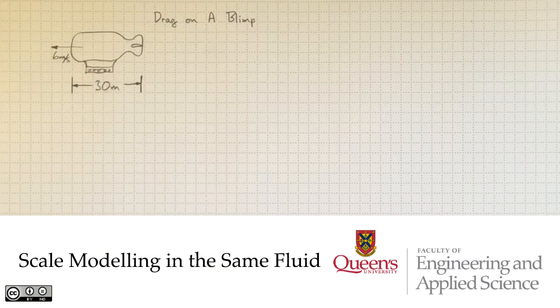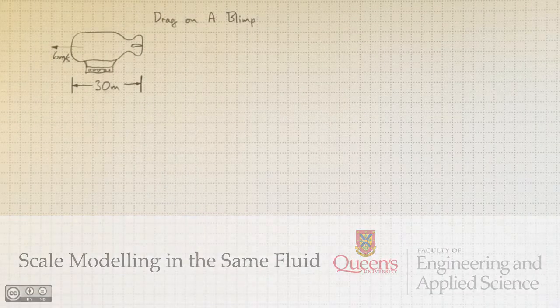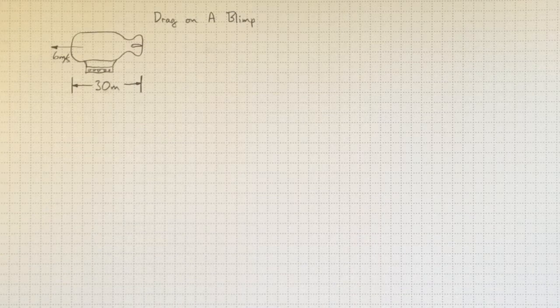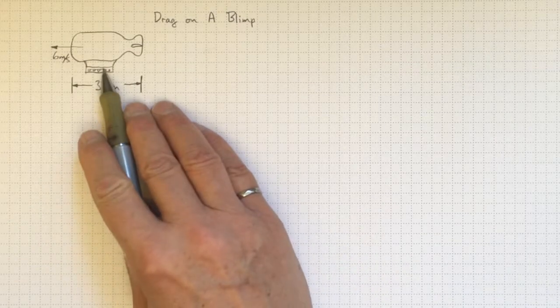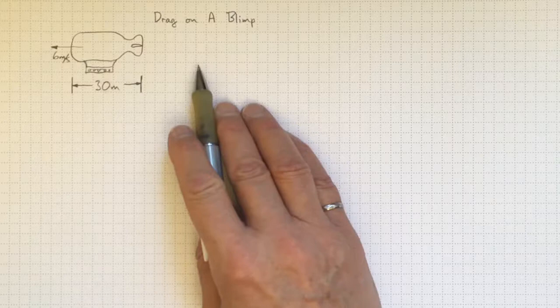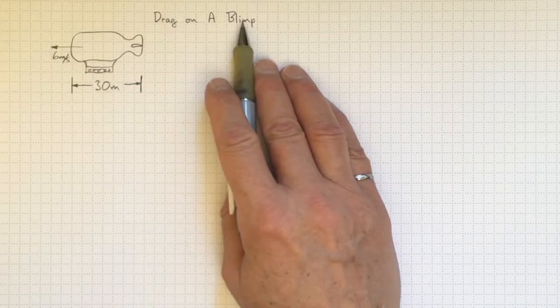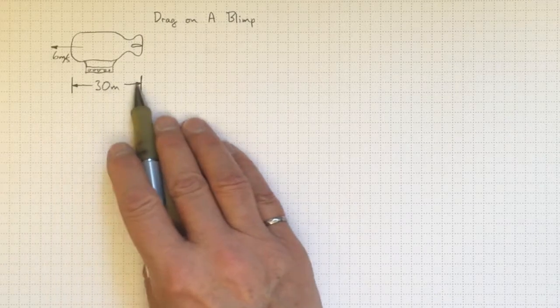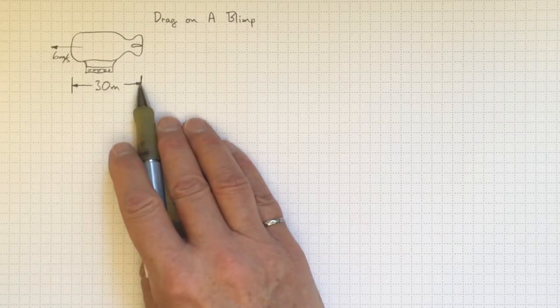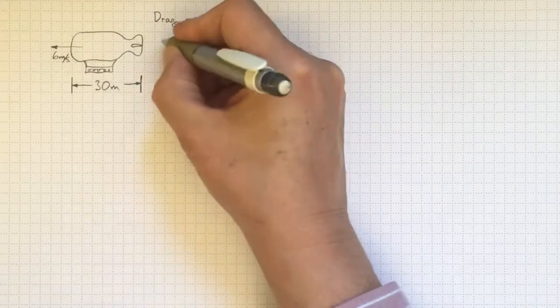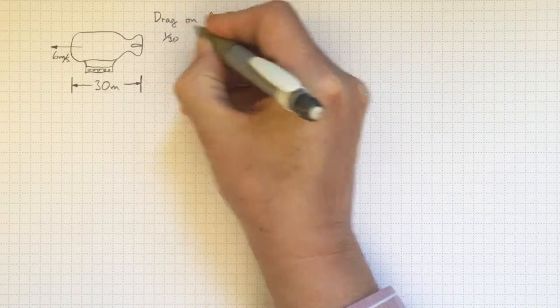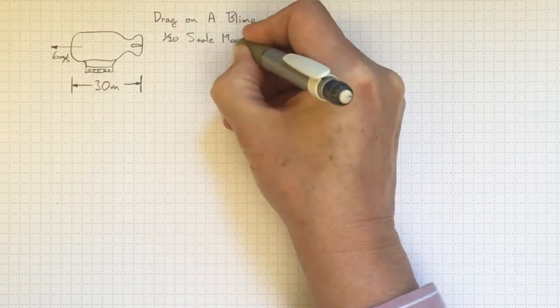Okay, here we're going to have a look at an example of scaling of drag forces so that we can predict what's going to happen with a large blimp by making some tests on a small model. So we'd like to find out what the drag is on the blimp. We don't want to build one that's 30 meters long. That's enormous. So let's try building one that's 1 meter long. That would mean it would be a 1:30 scale model.